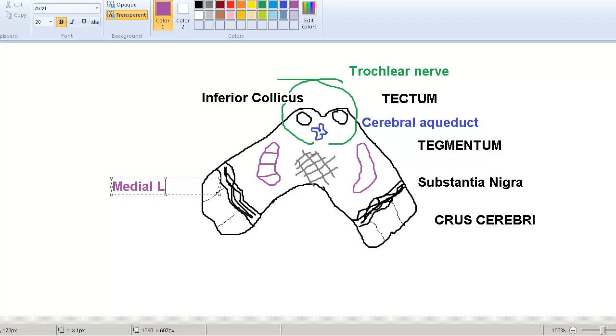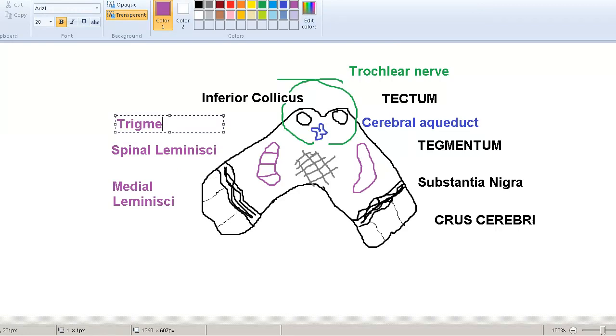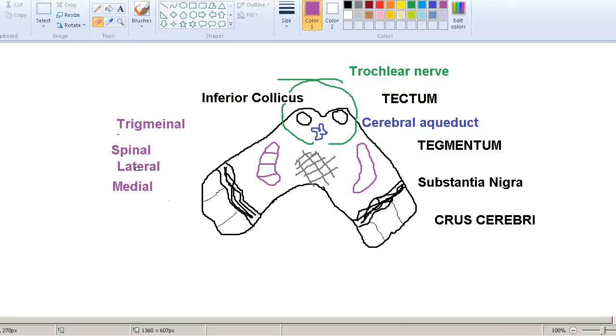We have the medial lemniscus. We have the spinal lemniscus. By the way, the medial lemniscus was the posterior column tracts, which were meeting at the nucleus gracilis and nucleus cuneatus. Spinal lemniscus is your spinothalamic tract, anterior and lateral. We have the trigeminal lemniscus. And, we have the lateral lemniscus as well. Lateral lemniscus involves the pathway of the sound.